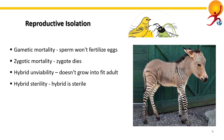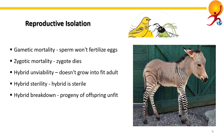Hybrid sterility — in this case, the hybrids are sterile. Sterility is mainly because of incompatibility of chromosomes. Mules and hinnies, as well as ligers, are quite good examples. Hybrid breakdown is when hybrids are fertile but their progeny are abnormal. Interspecific hybrids of cotton are a common example of hybrid breakdown.